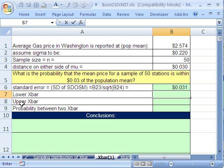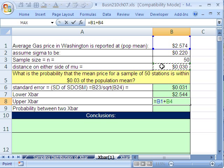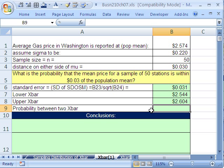Now we want to calculate our lower and upper x-bar. This is called the margin of error on either side of our population mean. I'm going to type equals, we'll get our average gas price, subtract this 3 pennies, and then Enter. And we'll do that again, but Add. So there are our lower and upper. $2.544 and on the upper end, $2.604.